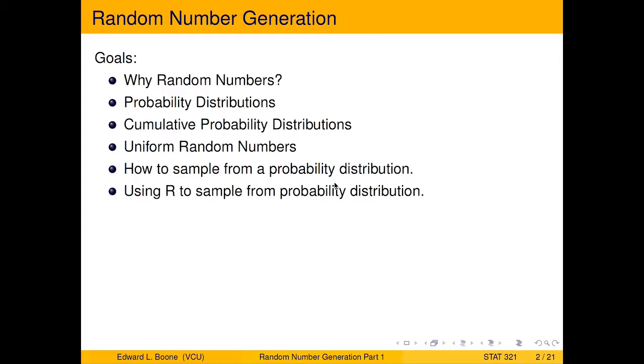So just hang on so we are all on the same page. We can talk about random number generation and how to do it first. So here are the goals: Why do we even need random numbers? How do we relate these to probability distributions? We're going to need cumulative probability distributions, uniform random numbers, and then we're going to talk about how to sample from a probability distribution.